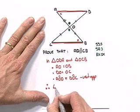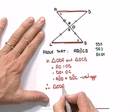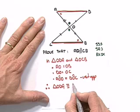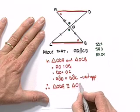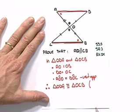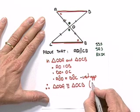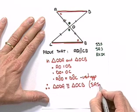We can now conclude that the triangle O-D-A is congruent to triangle O-C-B. And we like to tell the reader which case of congruency we used: side, angle, side.